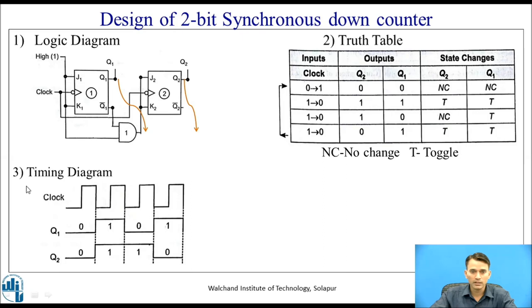The same thing is represented through the timing diagram. With the first clock it transitions from 0,0 to 1,1; with the next clock from 1,1 to 1,0; then from 1,0 to 0,1; and when another clock is given it transitions from 0,1 to 0,0, and the cycle repeats.